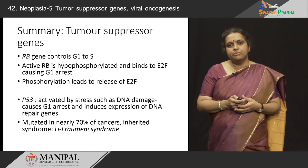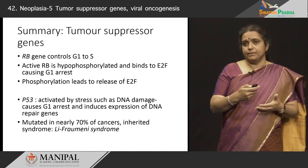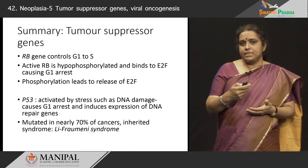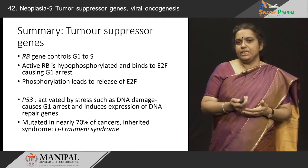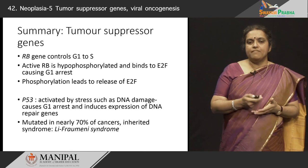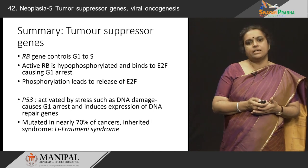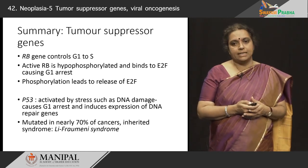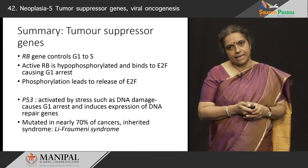In summary, the tumor suppressor genes control many of the normal cell cycle processes. The RB gene controls the G1 to S checkpoint; active RB is hypo-phosphorylated and binds to E2F causing G1 arrest, and phosphorylation leads to release of E2F for cell cycle progression. P53 is activated by stress such as DNA damage, causes G1 arrest, and induces expression of DNA repair genes. P53 is mutated in some familial cancers, including the Li-Fraumeni syndrome, in which the patient can acquire various cancers.